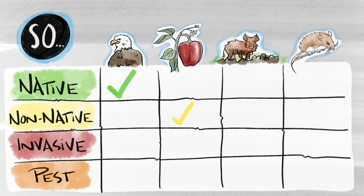For instance, a feral swine is non-native because it did not originate in the U.S., a pest because it causes damage to a variety of resources, and it's invasive both because it's non-native and causes harm. On the other hand, the white-footed mouse is native because it comes from the U.S., and may be a pest if it causes damage or health issues, but it's not invasive because it is native.